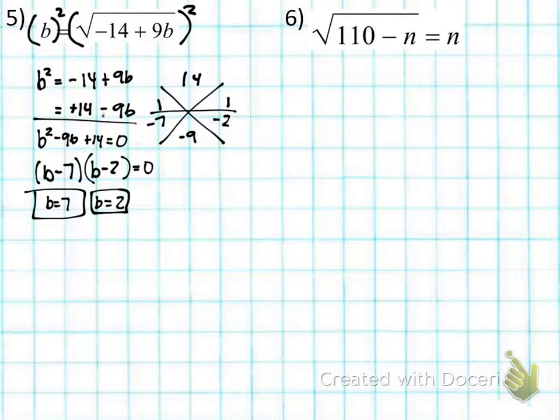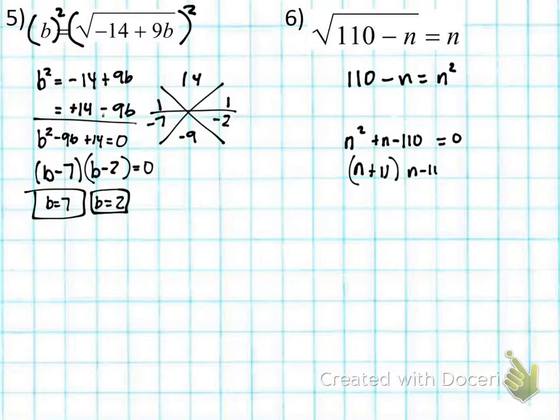Last one. This one's by yourself. Ready, set, go. In case you didn't get it, square both sides. You get 110 minus N is equal to N squared. Add N and subtract 110. So you've got N squared plus N minus 110 is equal to 0. So it's going to be N plus 11 times N minus 10 is all equal to 0. So N is equal to negative 11. N is equal to 10, and that's it.